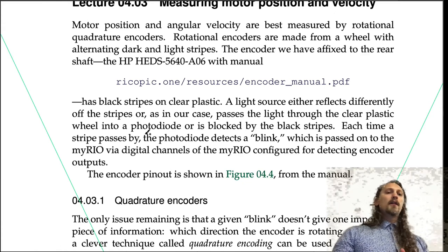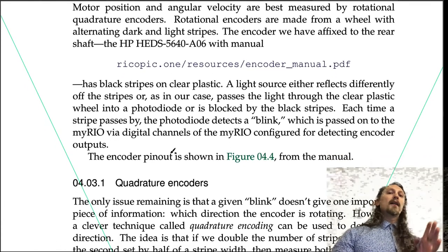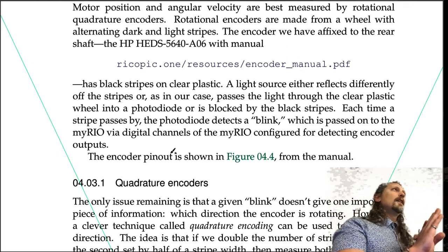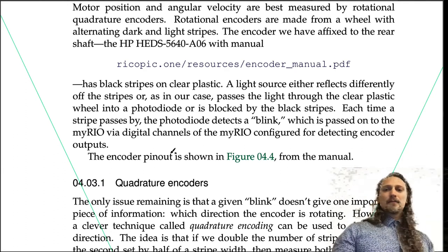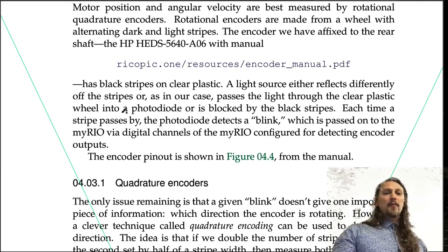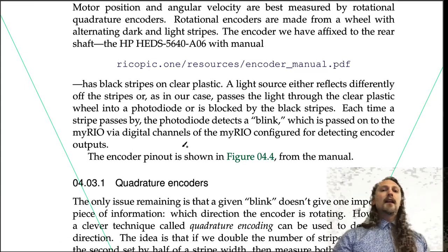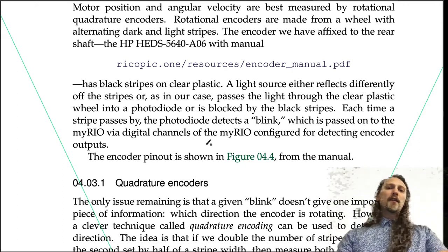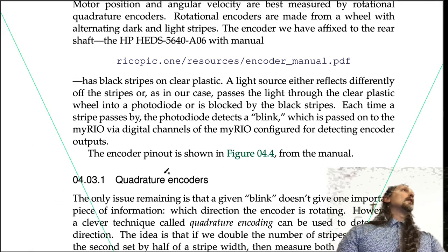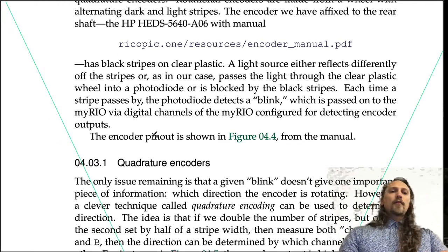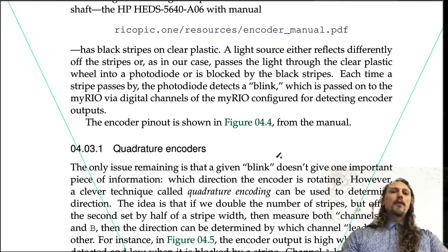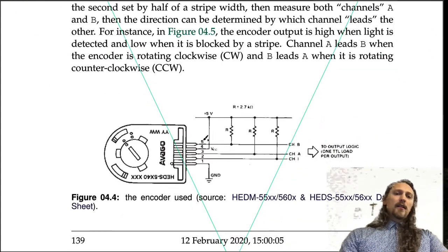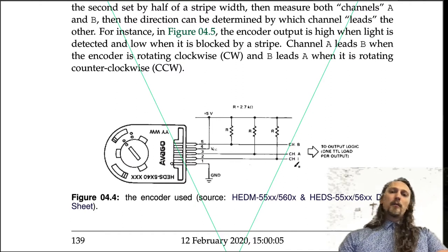A light source either reflects differently off the stripes or, as in our case, passes the light through the clear plastic wheel into a photodiode or is blocked by the black stripes. Each time a stripe passes by, the photodiode detects a blink, which is passed on to the myRIO via digital channels configured for detecting encoder outputs.